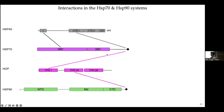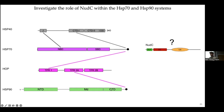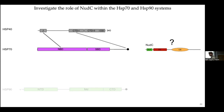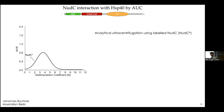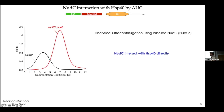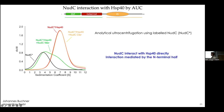We started with analytical ultracentrifugation using fluorescently labeled NUTC, which gives us the sedimentation coefficient linked to size. Adding unlabeled HSP40 shows an increase in size of NUTC, telling us the two proteins interact in vitro. We then tried to break this interaction by adding sub-constructs of NUTC, chopping the protein in two. The N-terminal half of NUTC has no effect on the complex, while the C-terminal half breaks it down, so the binding site must be contained in that C-terminal region.